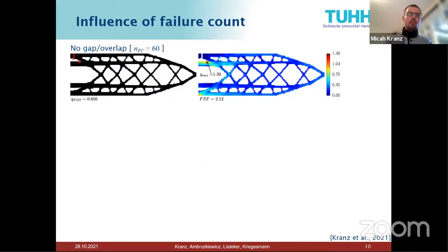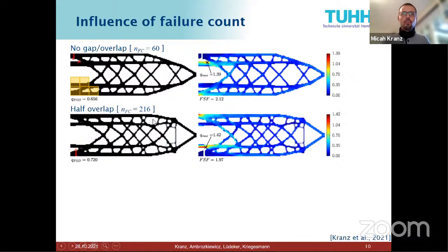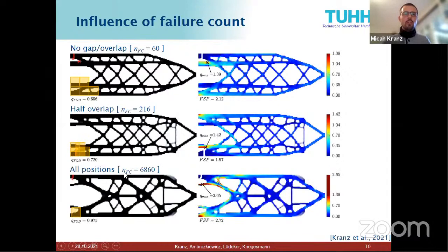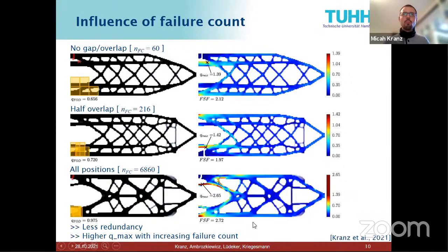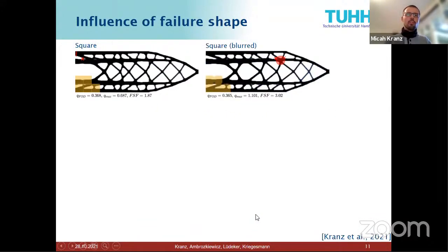Considering overlap: starting with no grid and no overlap gives 60 failure cases; with half-overlap, 216 failure cases; and at all possible locations, 6,860 failure cases. With increasing failure cases, the secondary load path near the clamp edge gets thinner and thinner, and consequently the worst-case stress increases. This is due to the local nature of stresses and is quite different from a compliance objective.